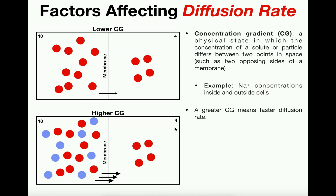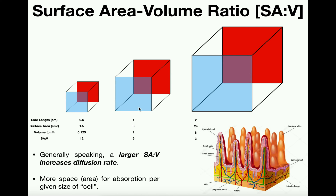Vice versa is also true: if we decrease the concentration gradient, we decrease the diffusion rate. These are directly proportional. The third factor we're going to discuss is the surface area to volume ratio, which is a somewhat confusing topic.